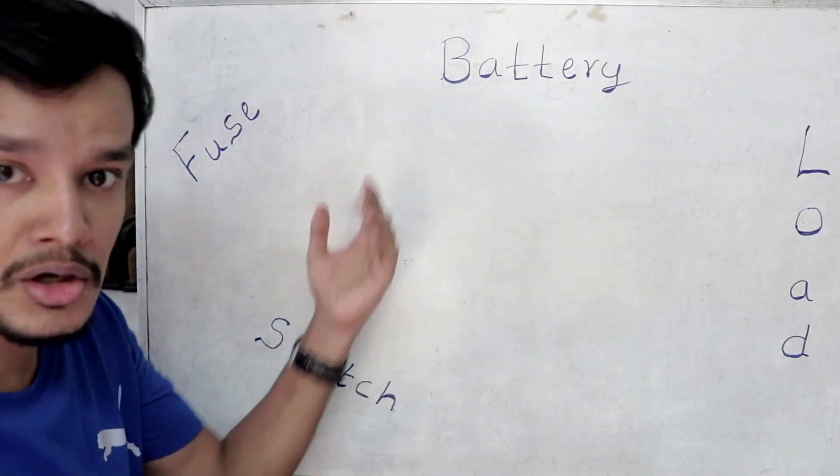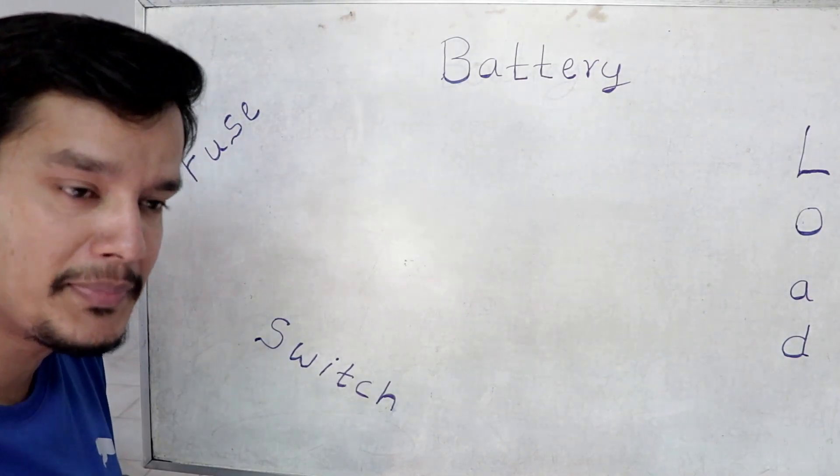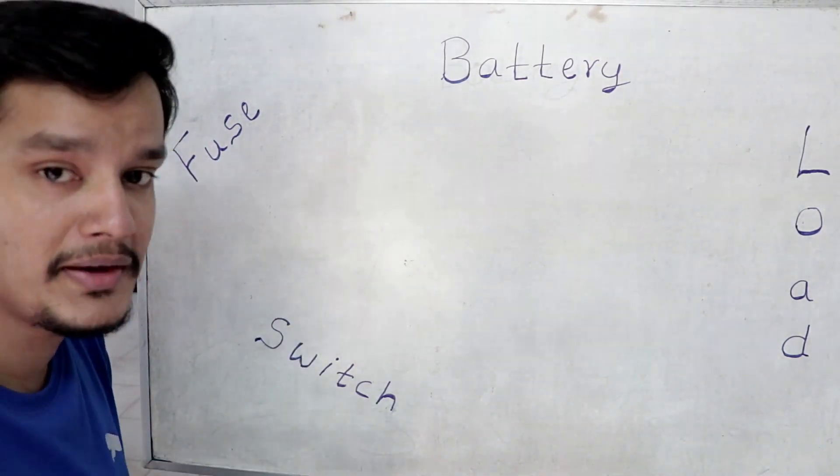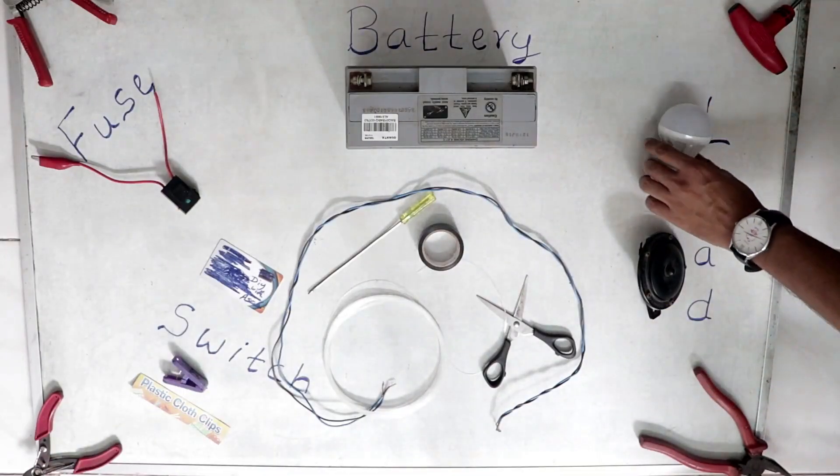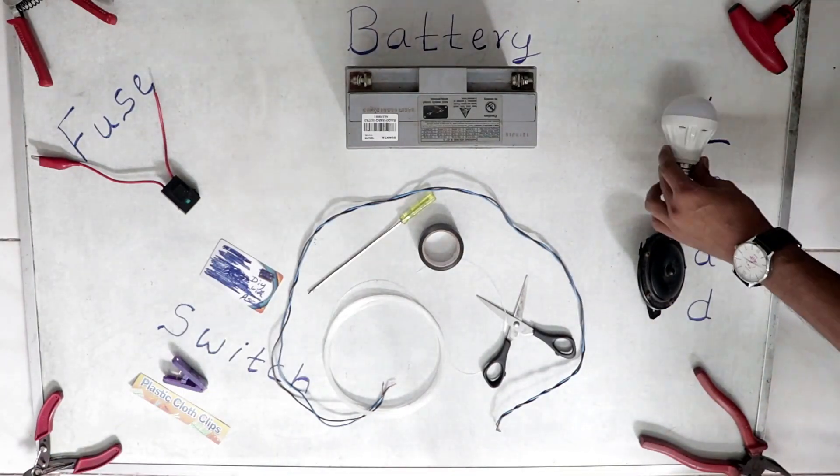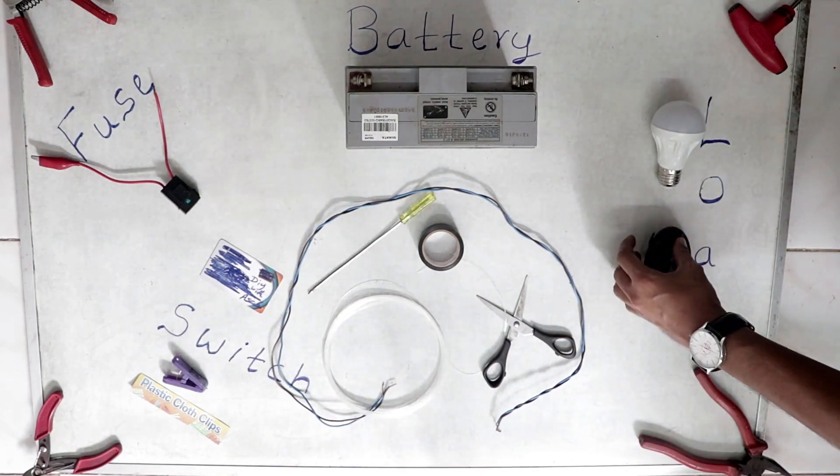Now these are the things that you'll be needing: you're going to need a battery to power the entire circuit, a fuse for the safety purpose, a switch to operate this load, and the load that you're going to operate.